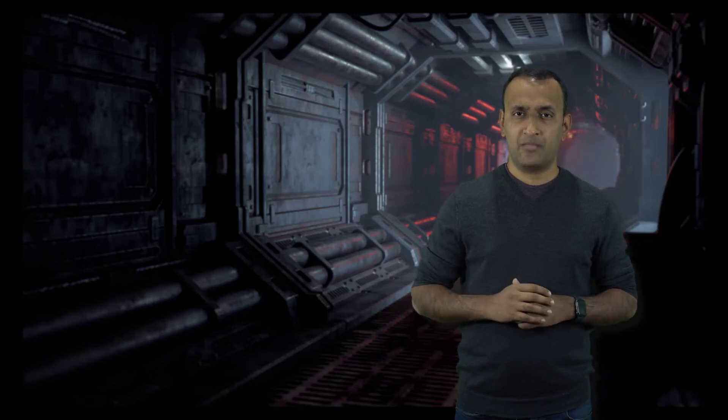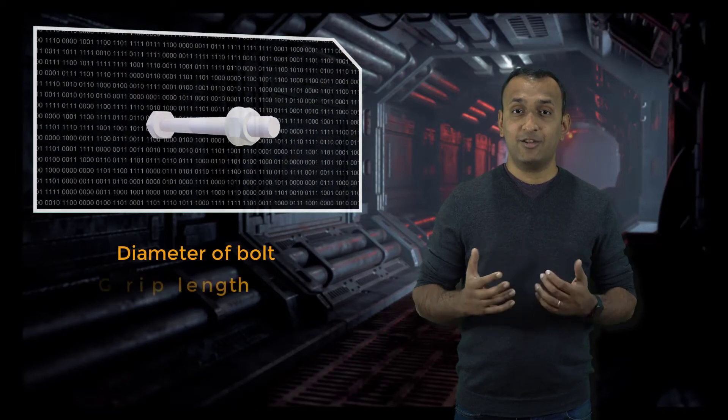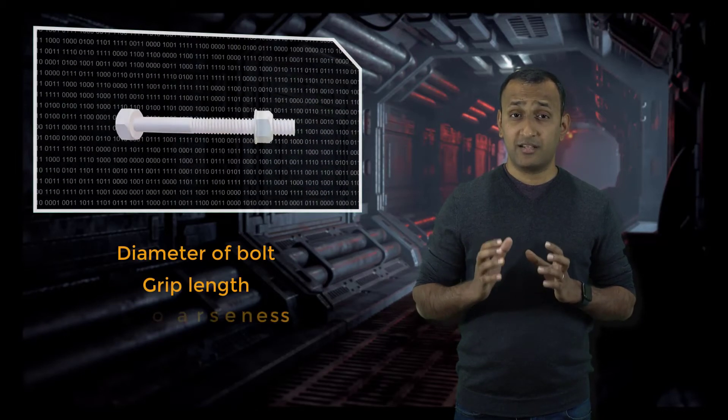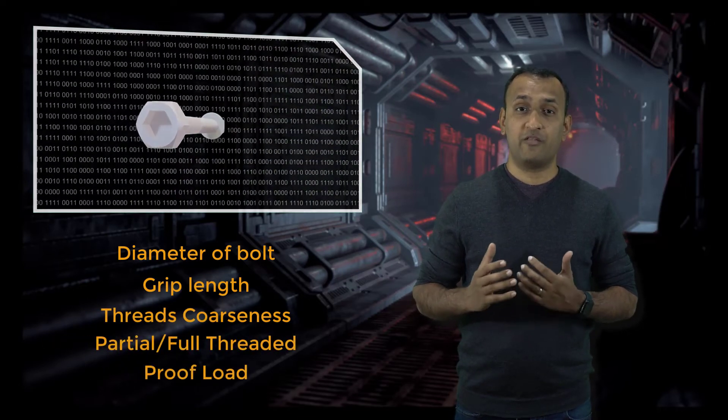But that narrows down the choice of bolts that can be used in the design. So, depending on the application and the materials involved, it's important to pick the proper bolts to achieve the engineering targets. In order to select a bolt that meets the design specifications, one must consider several factors, such as the diameter of the bolt, the length of the grip length, the thread's coarseness, a partial or fully threaded bolt, and the proof load of the bolt.